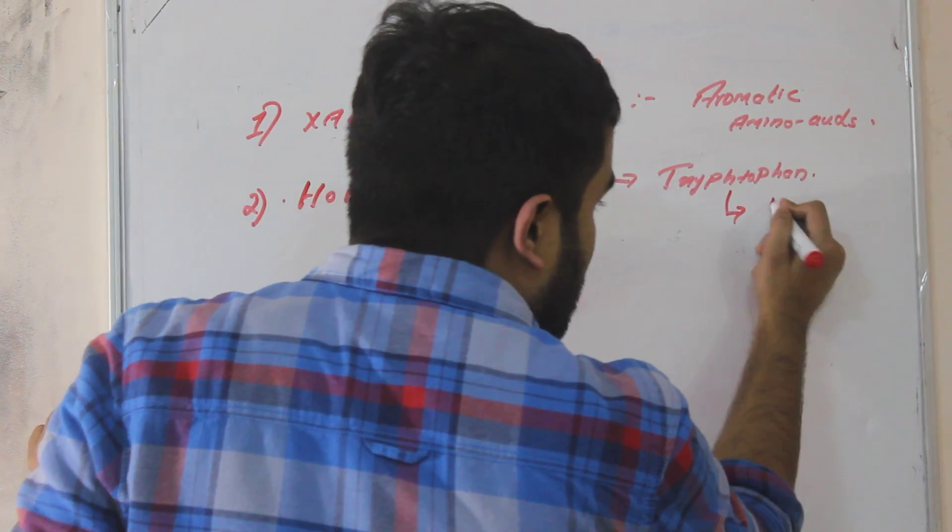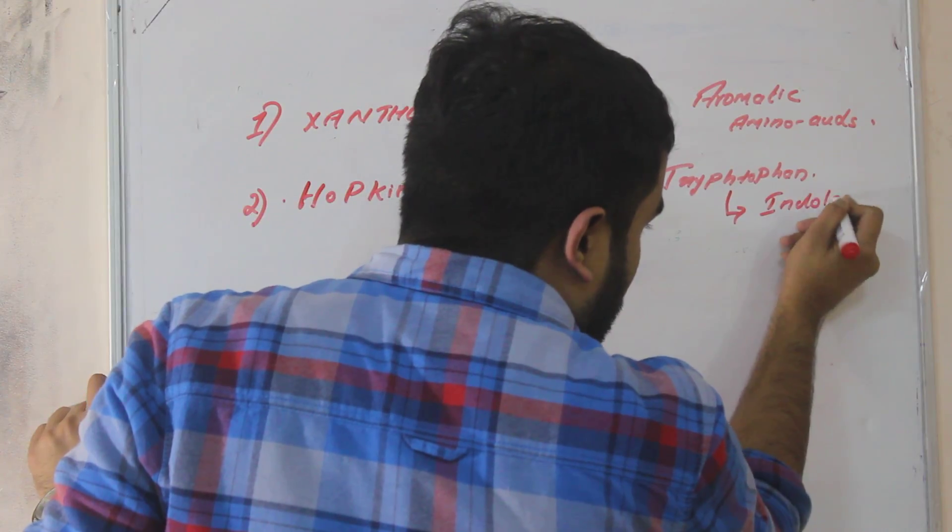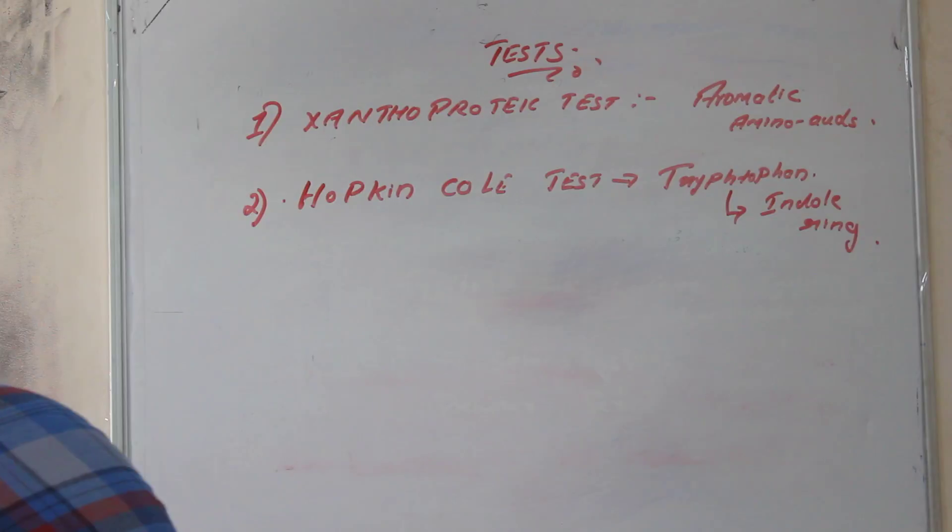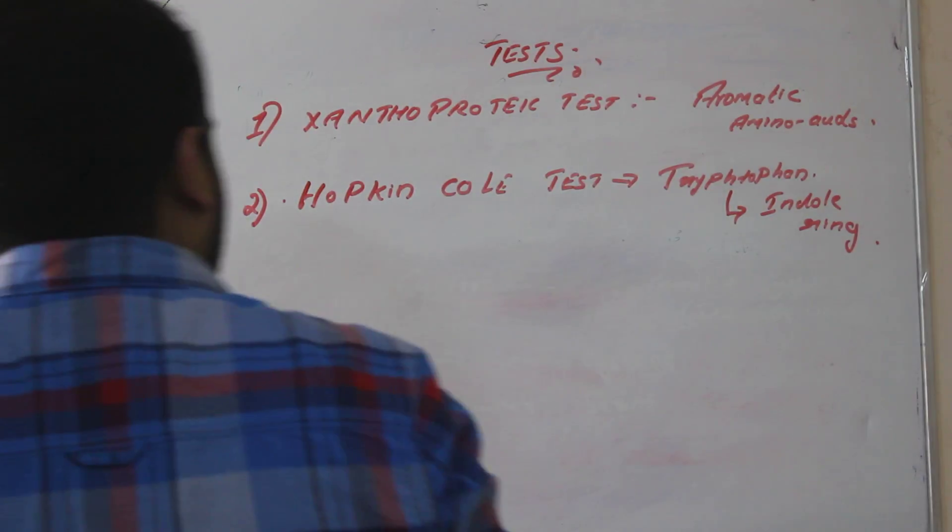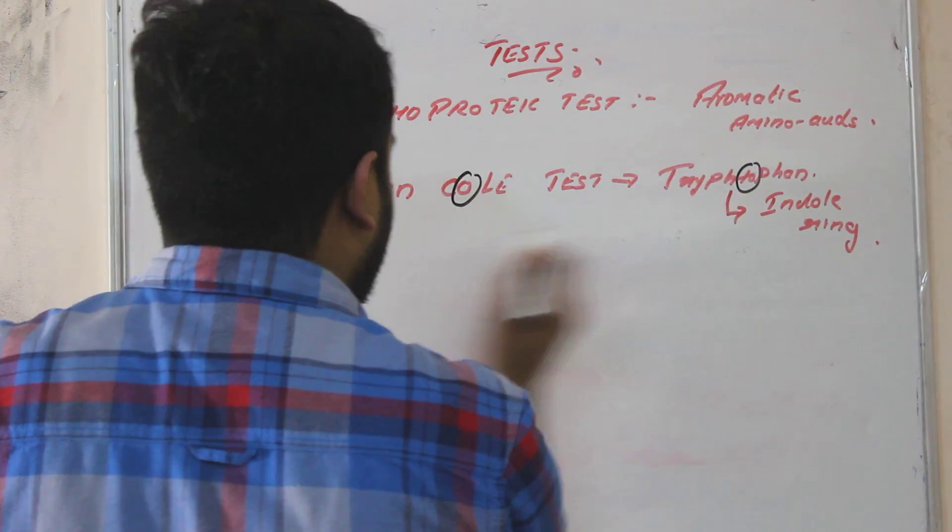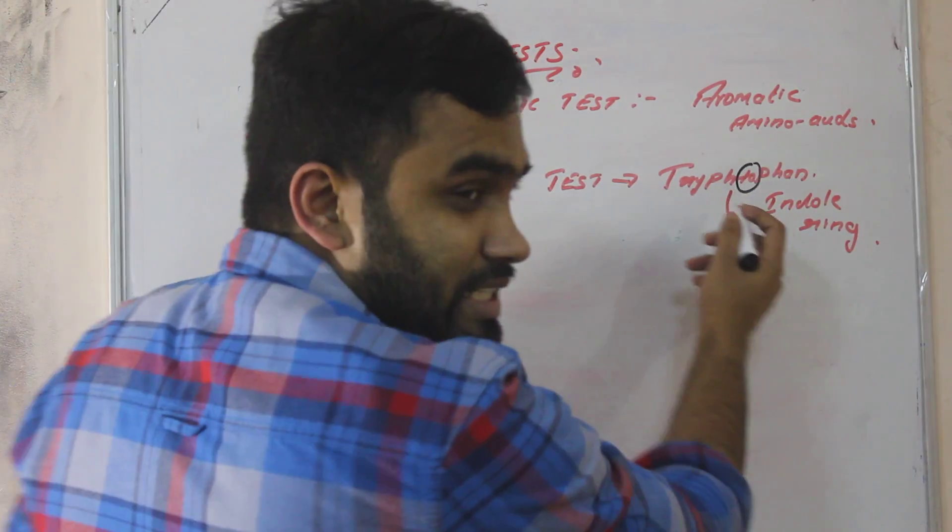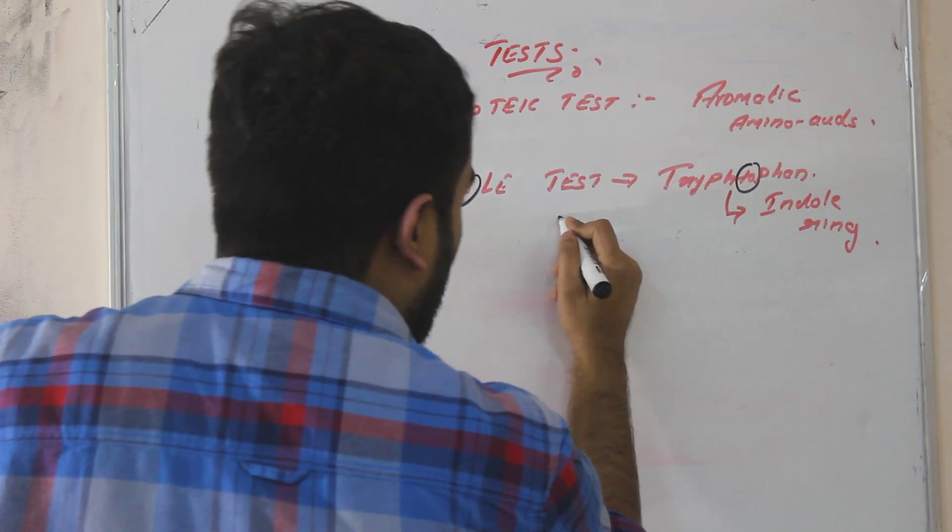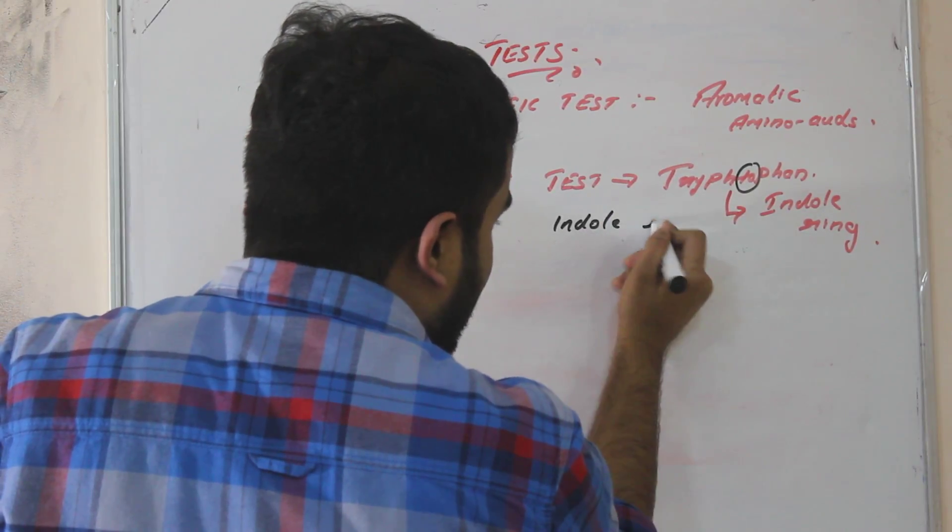This tryptophan has an indole ring. You can easily remember this - Hopkins Cole, tryptophan also. Hopkins Cole is for tryptophan. It is also known as indole ring test.